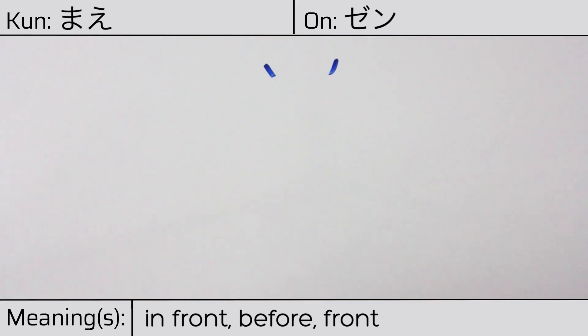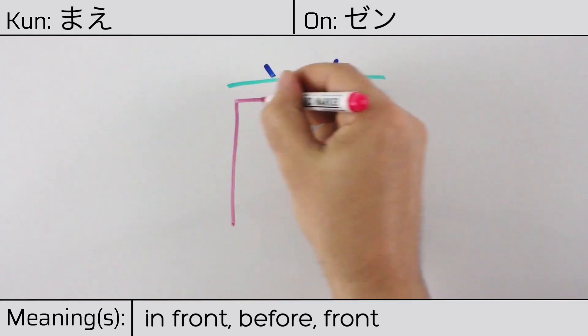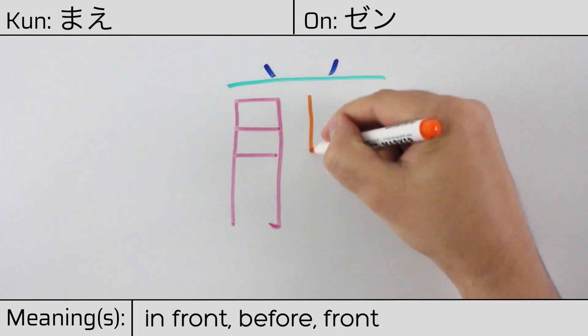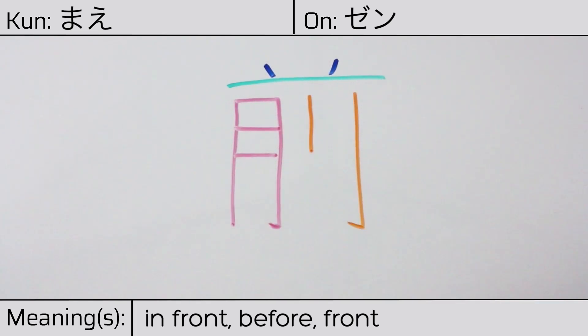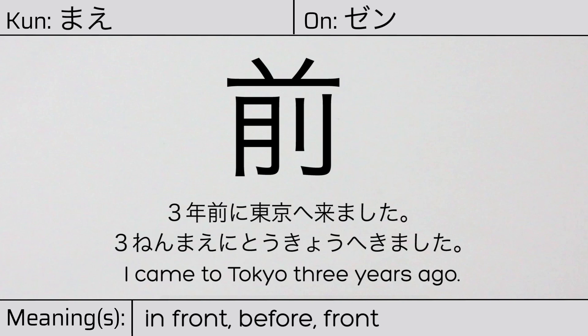This character is made up of the following radicals or parts: a lid radical which is just two dots followed by ichi or one, the meat or flesh radical on the left known as nikuzuki, and the knife or sword radical katana on the right, known as rittou. You can remember this kanji by the following hint: before cooking, one needs to cut the vegetables and meat with a knife. Our example sentence is: San nenmae ni tokyo he kimashita — I came to Tokyo three years ago.